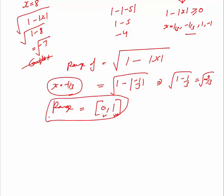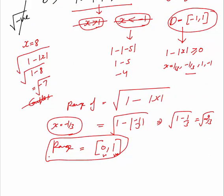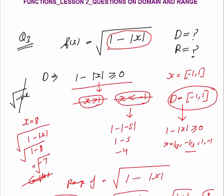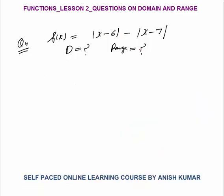The domain is the set of all valid inputs, which is minus 1 to 1. That was a bit difficult question and I hope you understood it. Question 4 is f(x) = mod of (x minus 6) minus mod of (x minus 7). What is the domain and range? First try to solve it yourself, then look at the way I have solved it.